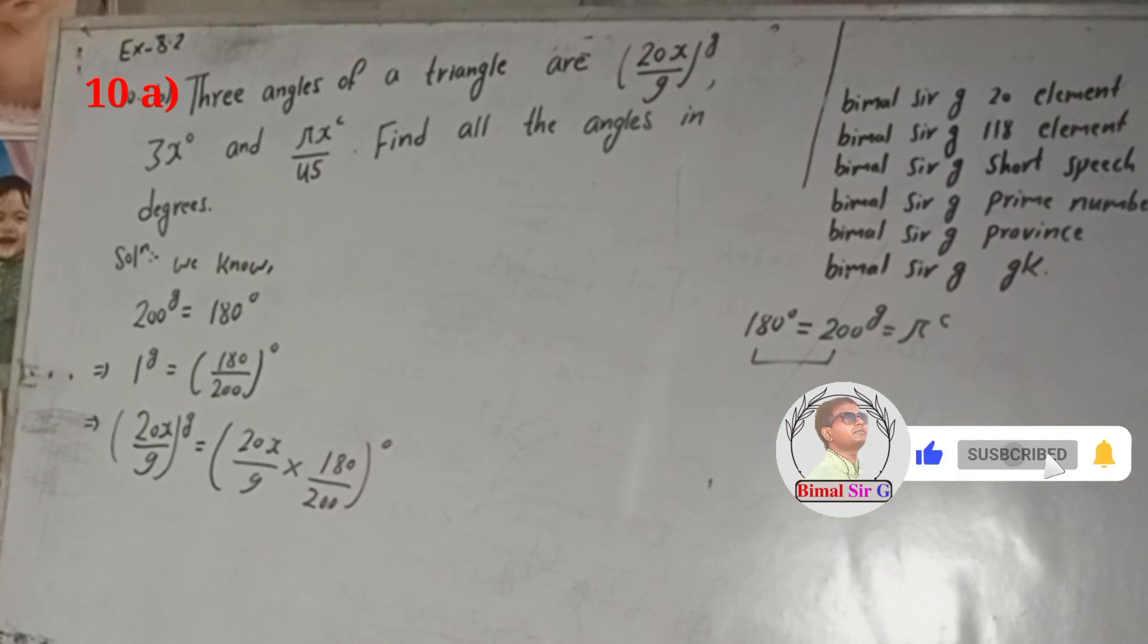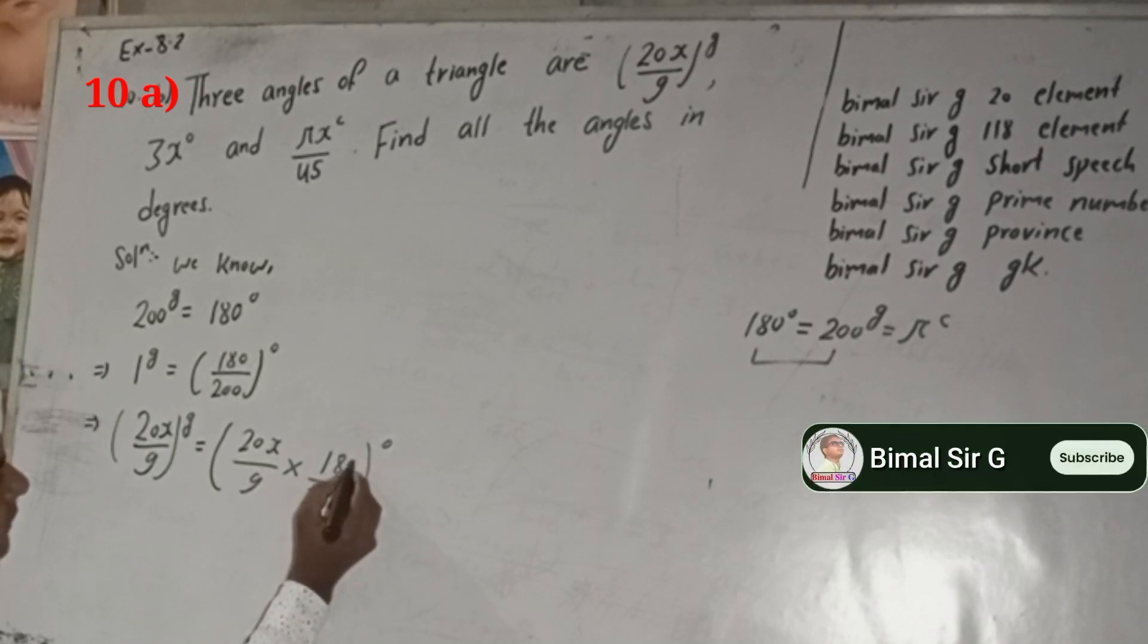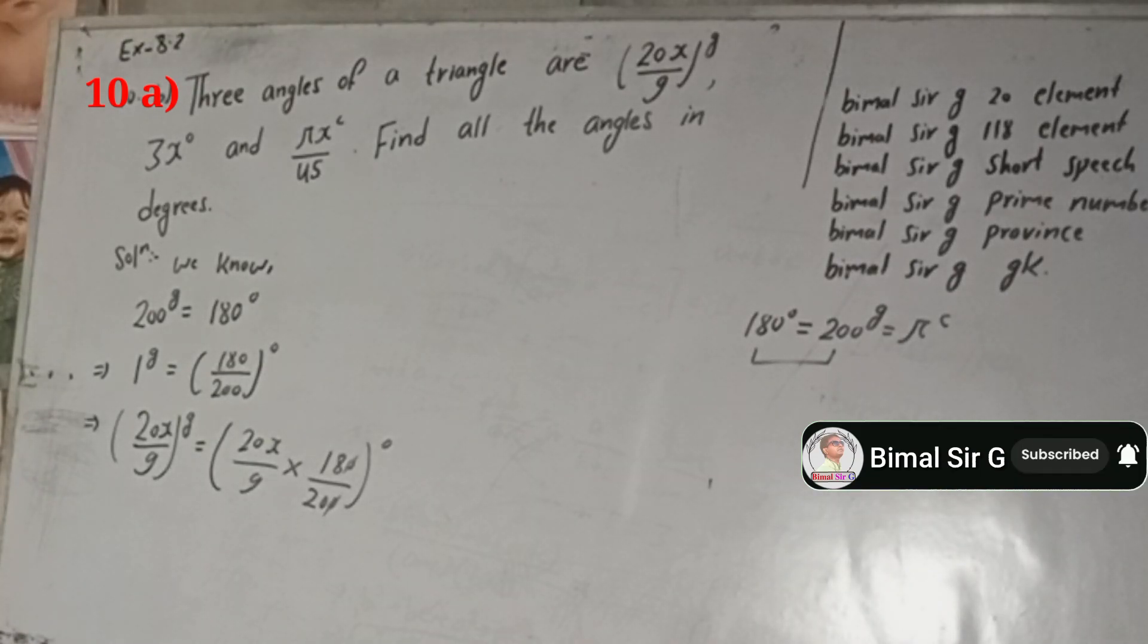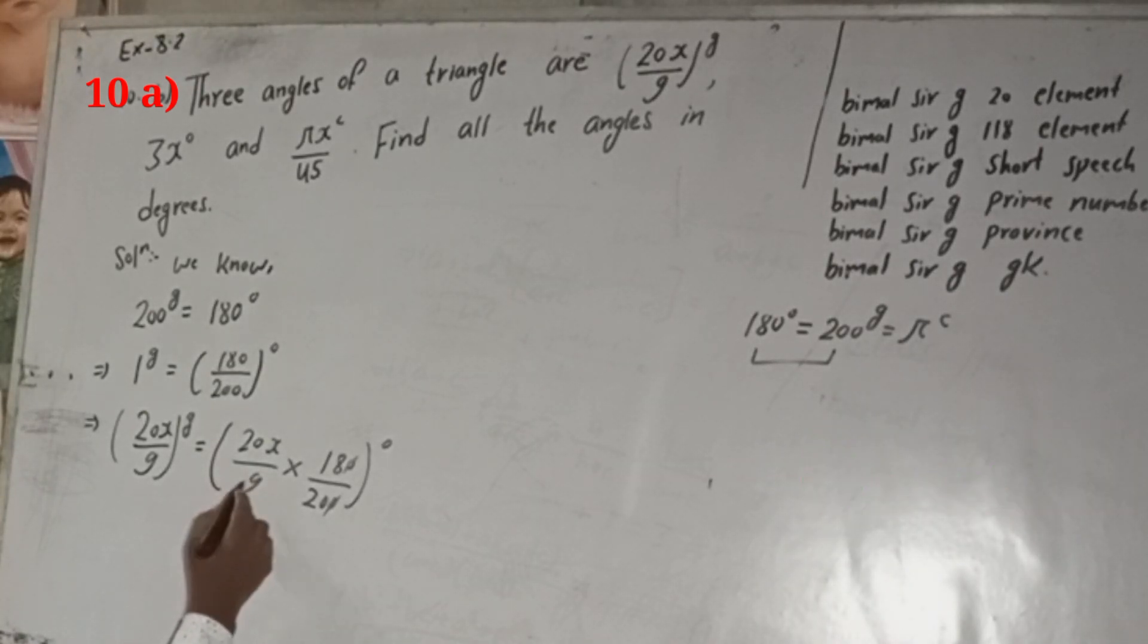So here we can cancel this 0, 0, and this 9 plus 18, and this 20 and this 20, cancel.